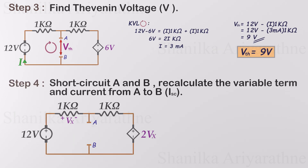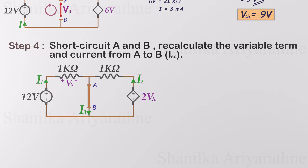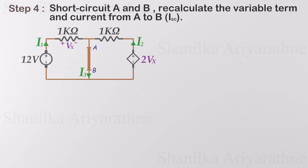Now we short-circuit terminals A and B and calculate the current flowing through the short circuit. Remember, since we've changed the circuit by adding a short circuit, the variable term Vx we calculated earlier is no longer valid. We need to recalculate it.